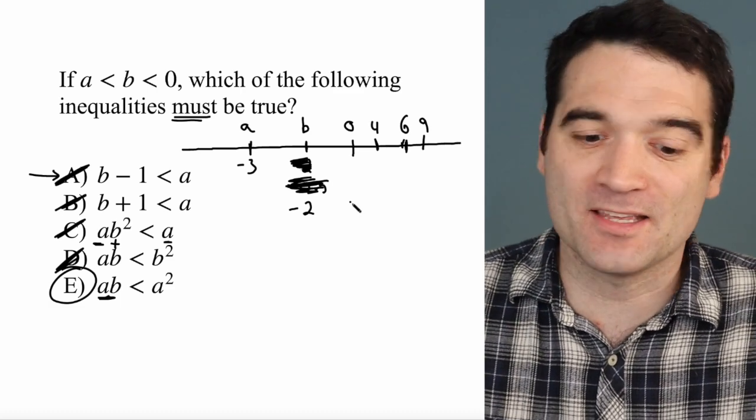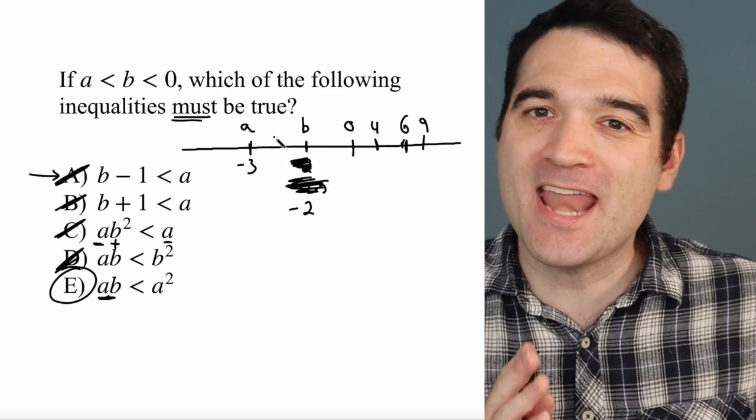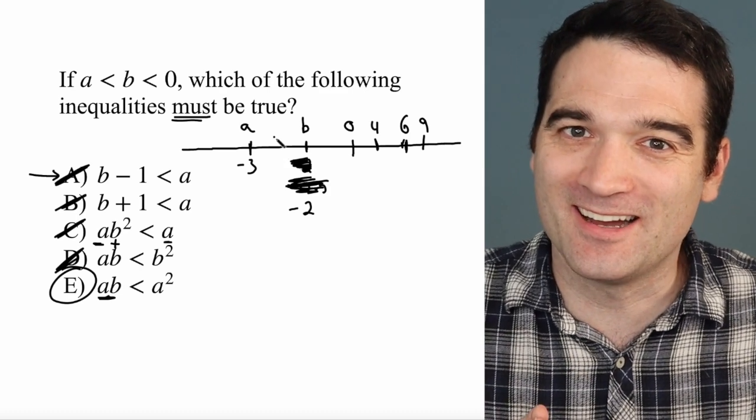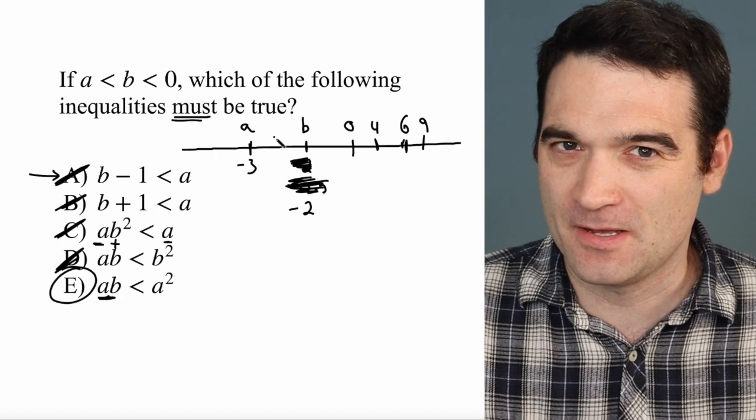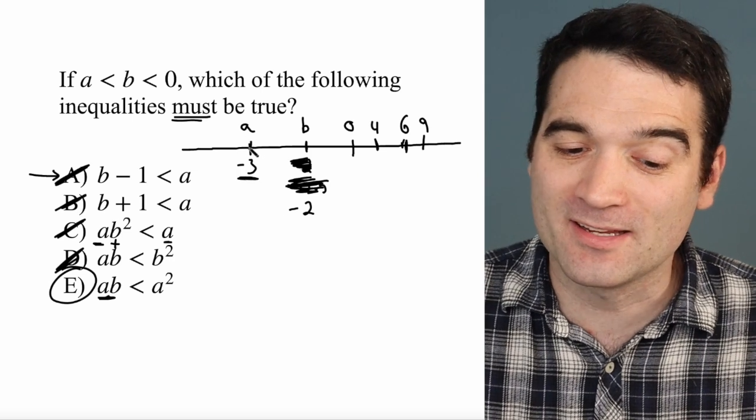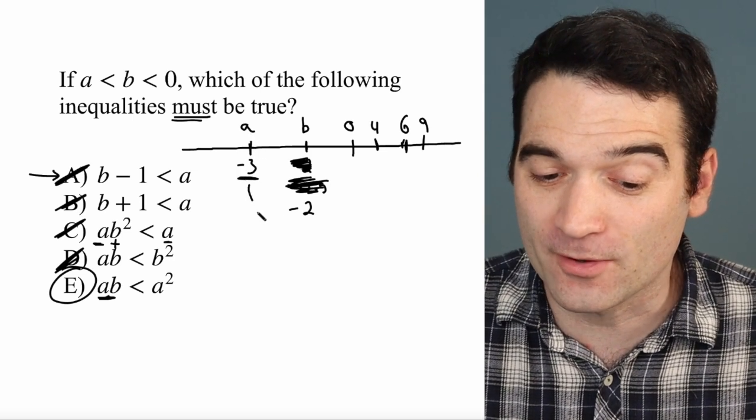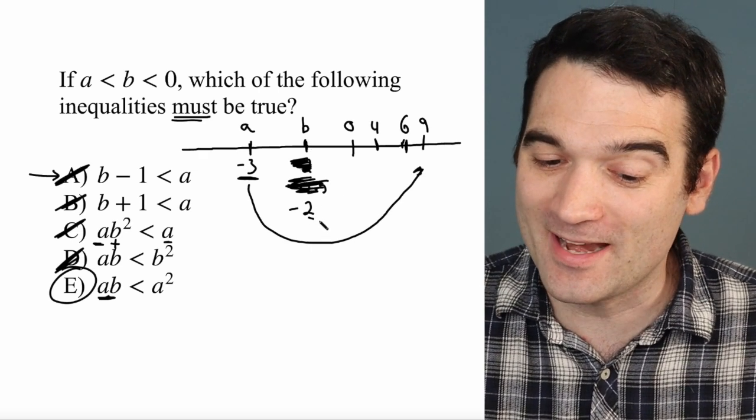And the reason why this is always going to be true is because the negative zone of the number line is a mirror image of the positive zone. Think about that. If I take a negative number and I square it, it's going to go further into the positive zone than B would.